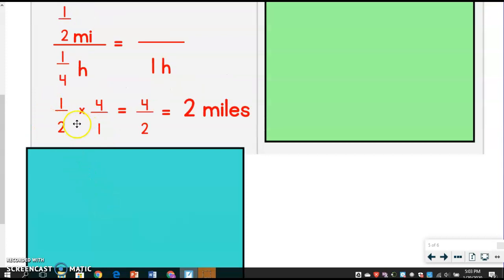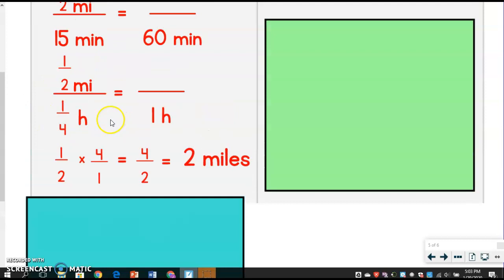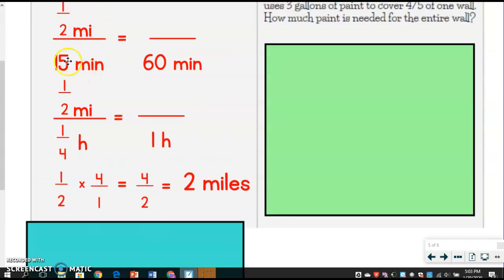So you have one-half times four over one, right? Because if I had the division, it would be one-half divided by one-fourth, and so I'd have to do keep, change, flip. So you can think of it that way, or you can use this one and think, well, to get from 15 to 60, I do times four, so times four here.